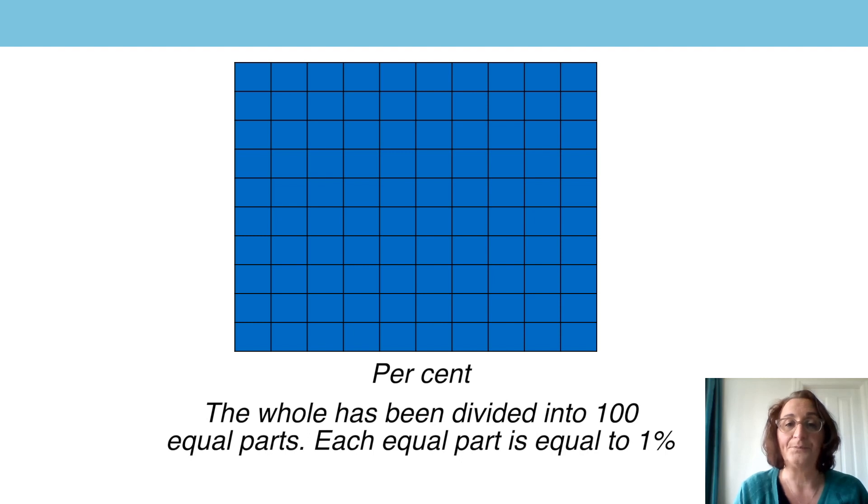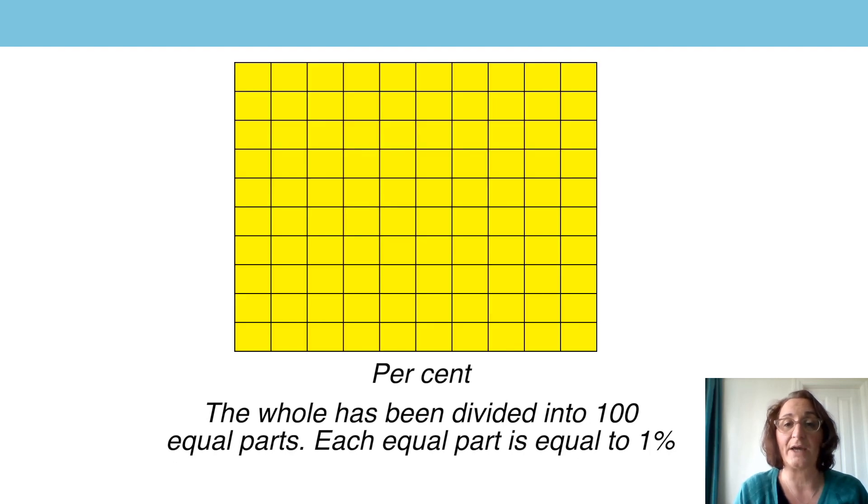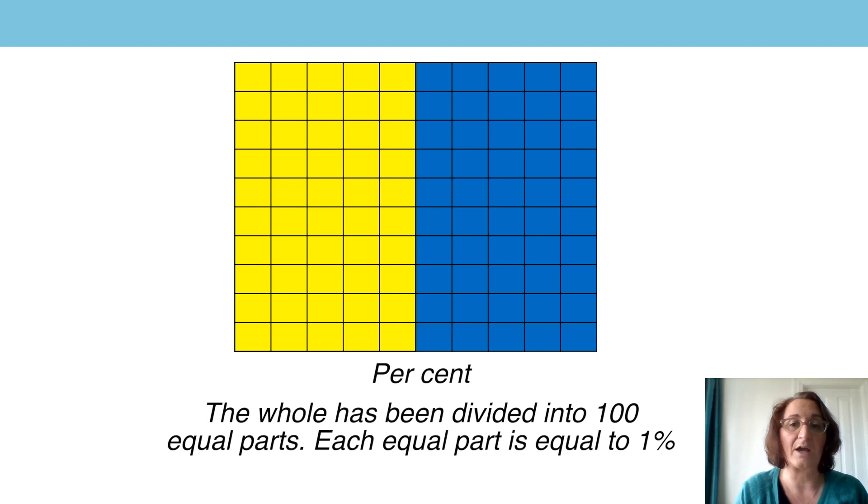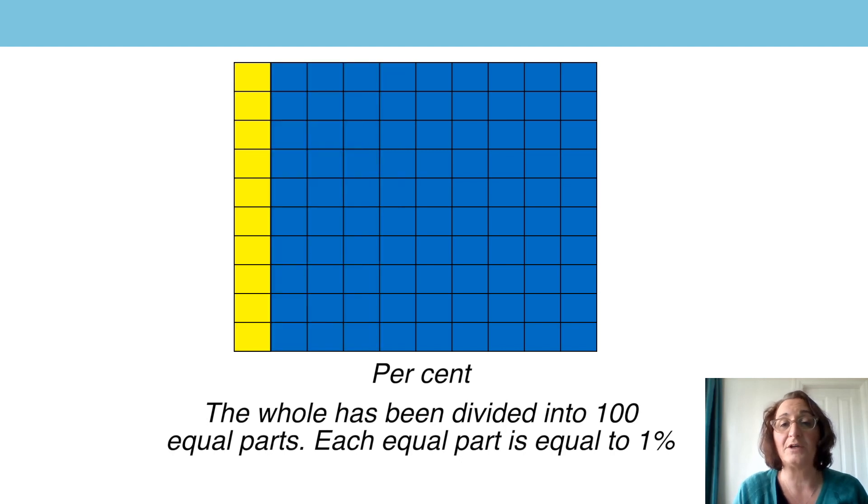For example if 100% of the children in a class have brought in their homework then it means that every single child in that class has completed it. If 90% of the class have completed their homework then the majority of the class have completed it. If 50% have completed their homework then only half of the class have completed it. If only 10% of the class have completed their homework then only a small proportion of the class have completed it. 0% would mean that no children had completed it at all.